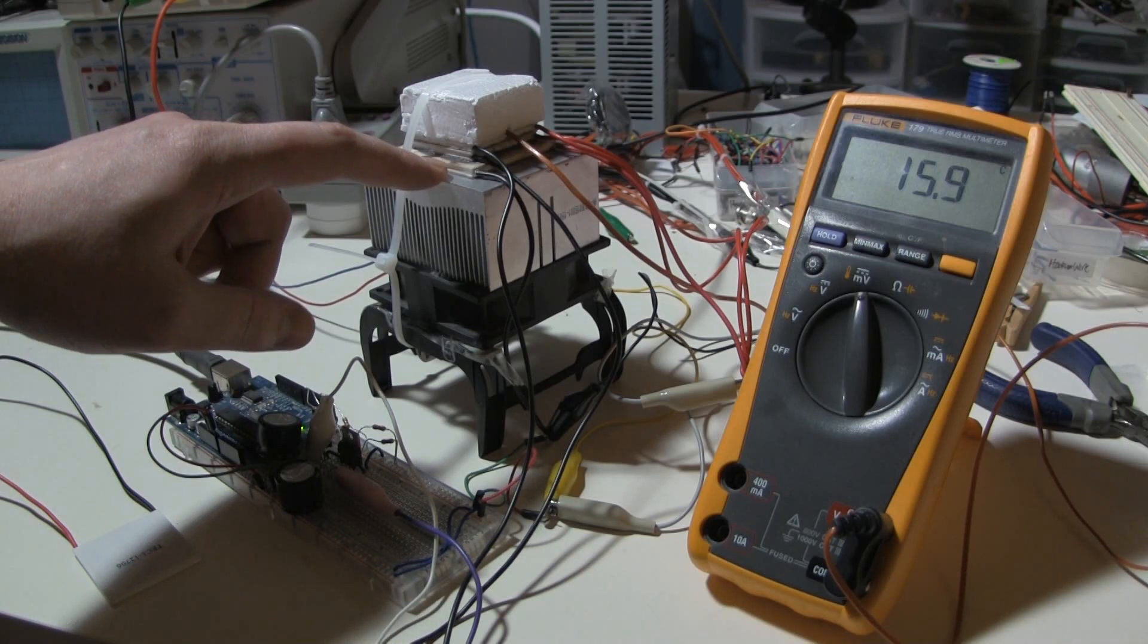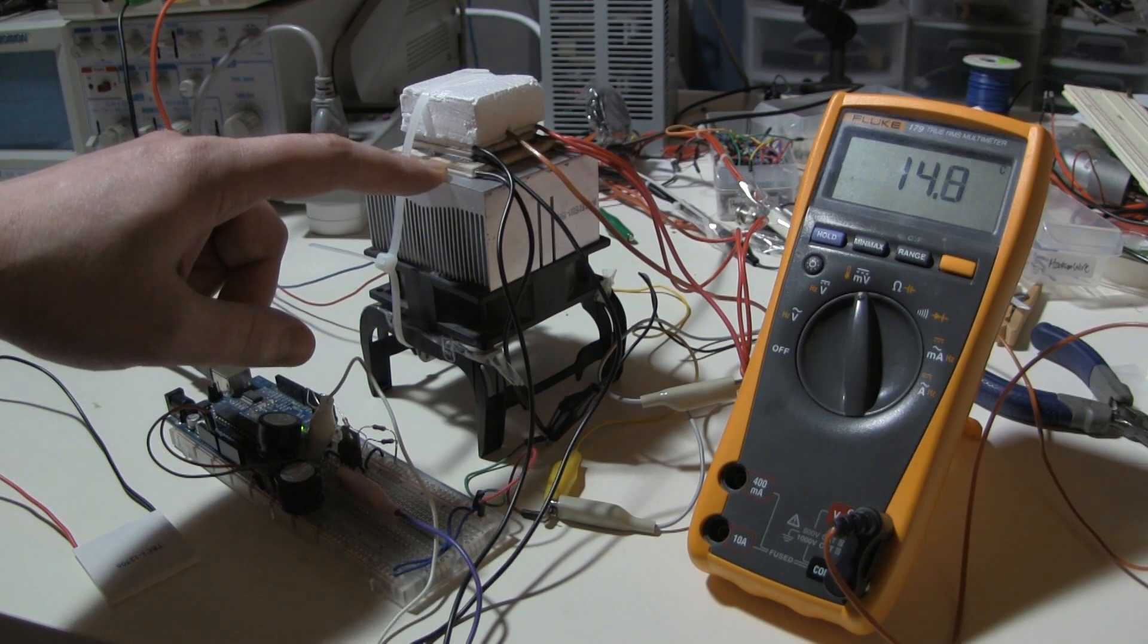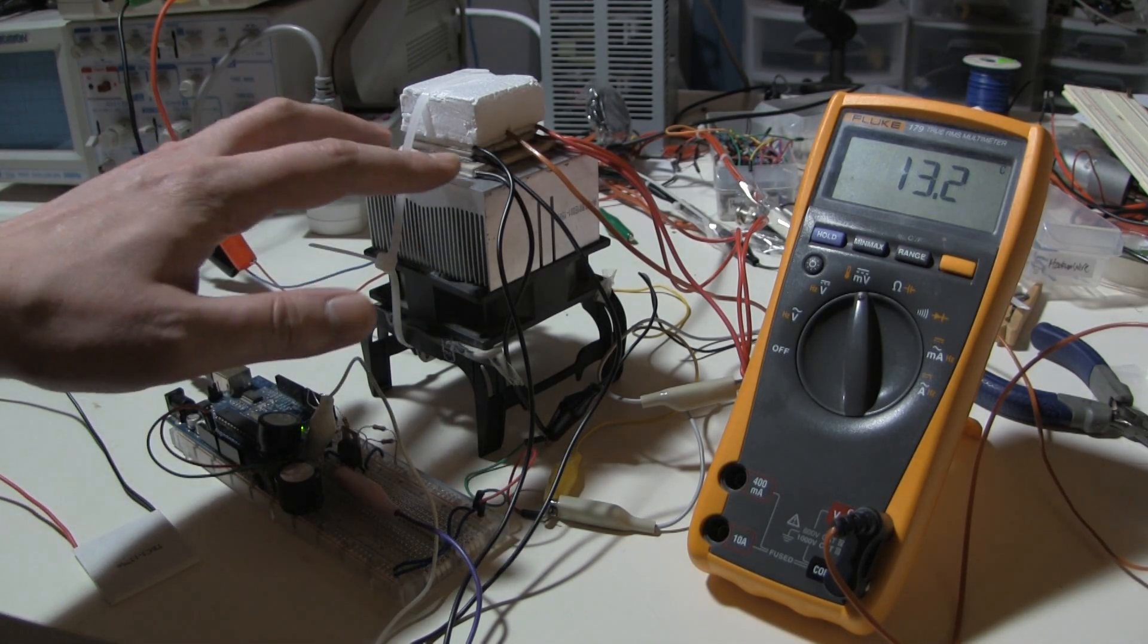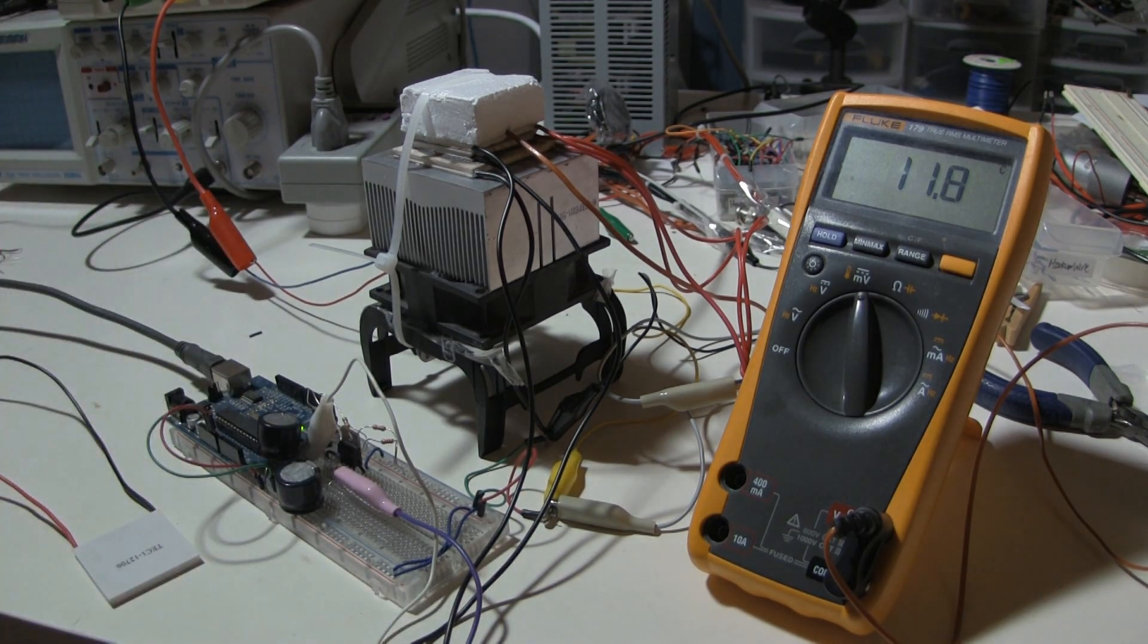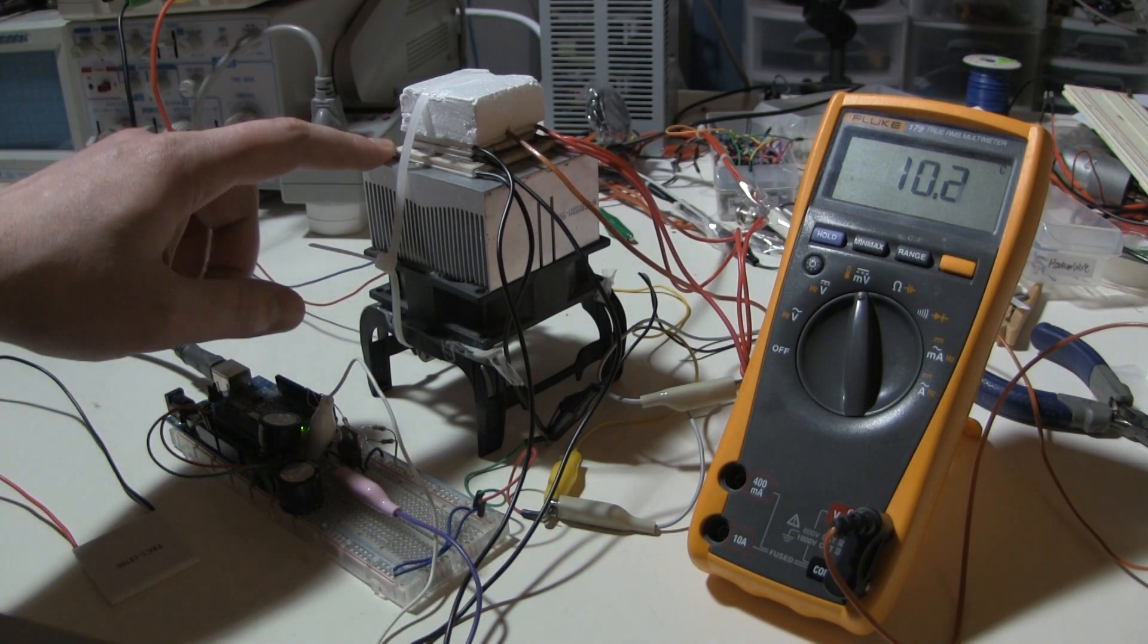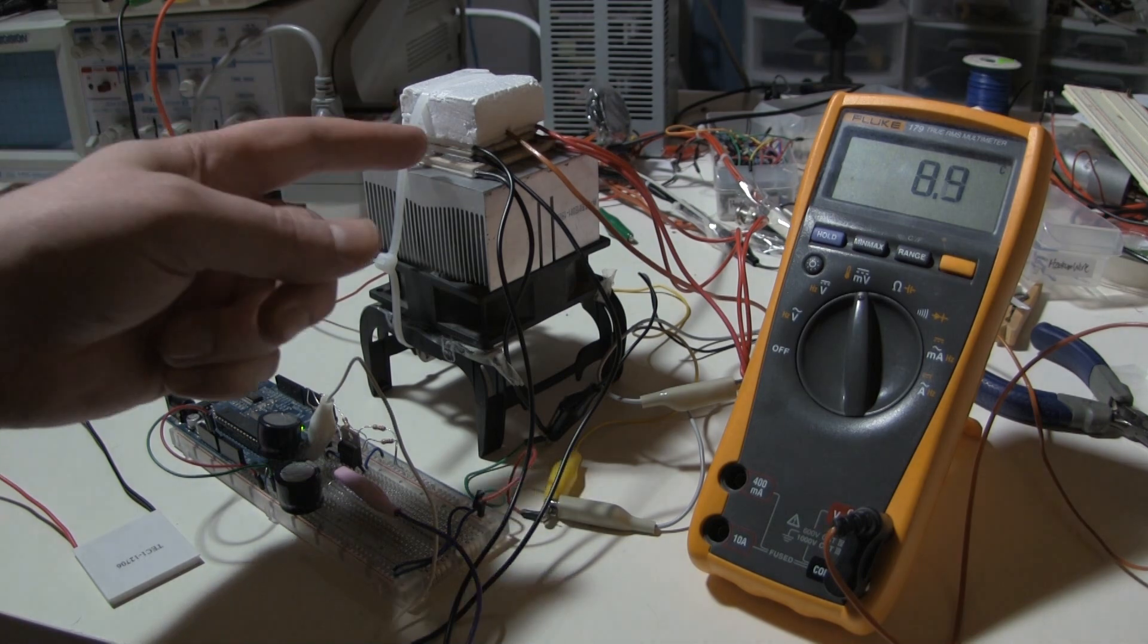The bottom thermoelectric cooler is just connected directly to 12 volts. I didn't say that before, but this one is not controlled by my apparatus here. So the one on the bottom here is just maxed out. And then the second and third, they're smaller peltier coolers. So they automatically move less heat for the same amount of power or the same amount of voltage.